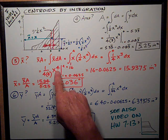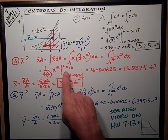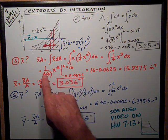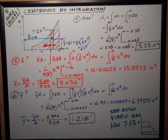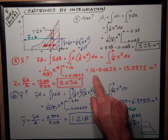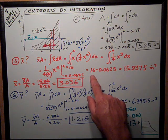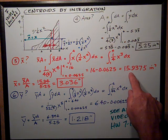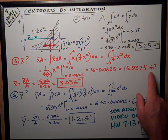At x to the fourth, I believe it's 256 for x to the fourth, four to the fourth, divided by 16 equals 16. Just do the subtraction. I get that x-bar A equals 16 minus 0.0625, 15.94 inches cubed.